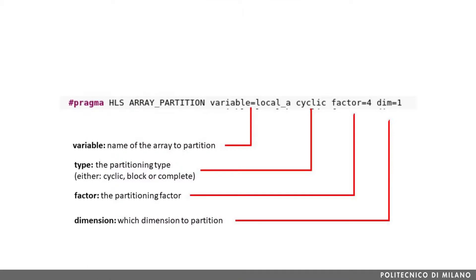The Vivado HLS array partitioning pragma requires several parameters: the name of the variable to partition; the partitioning type, which can be either cyclic, block, or complete; the partitioning factor, which is meaningful only for cyclic and block partitioning; and the dimension of the array to partition, as we will see that multi-dimensional arrays can also be partitioned.